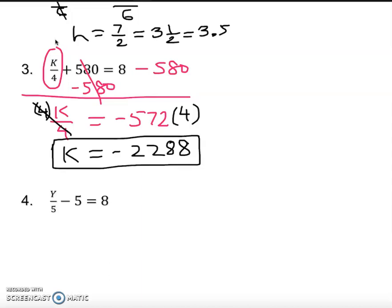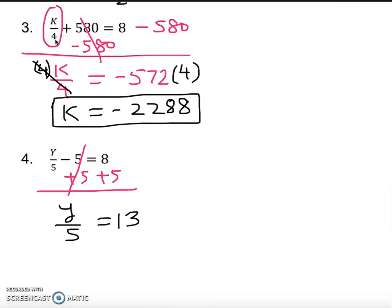Let's take the next one. Same thing, we do plus 5 on both sides to cancel it out. Y over 5 equals 13. Then what can we do? We can multiply by 5 on both sides. This cancels out, Y equals 65. This is our answer. I hope you understand. Thank you.